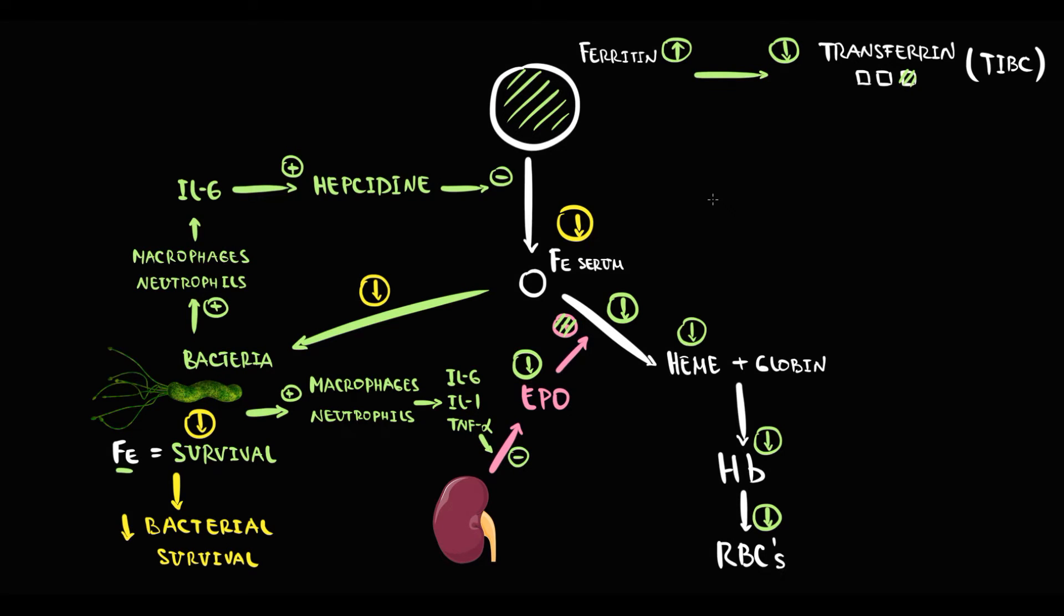The problem is that without iron, we cannot survive either, because without iron, the production of heme decreases. With decreasing heme production, the production of hemoglobin and red blood cells decreases, and decreasing hemoglobin we call anemia.